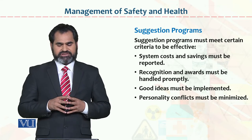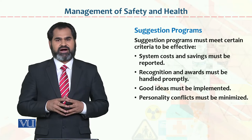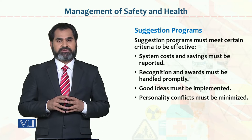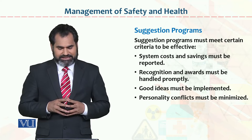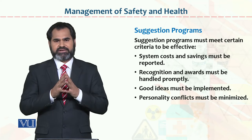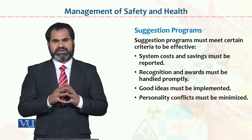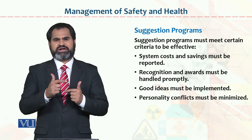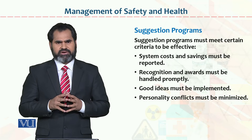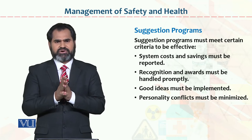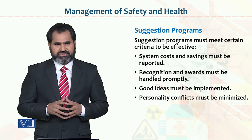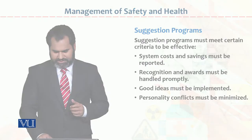System costs and savings must be reported. Recognition and awards must be handled promptly. Good ideas must be implemented. Personality conflicts must be minimized — between employer and employee, manager and employee, supervisor and subordinate. Sometimes conflicts arise among these; minimize them. Listen to every person and provide benefits and facilities according to their job designation. Through suggestions, you can overcome these issues.